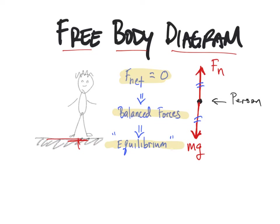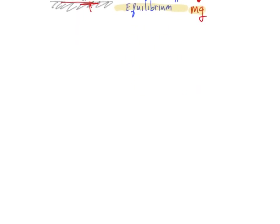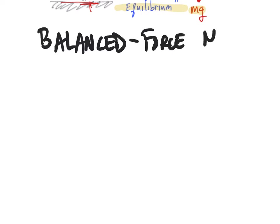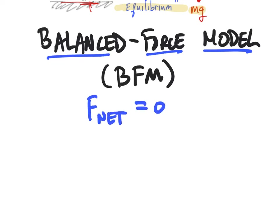What we're moving into right now is the balanced force model, which I'll abbreviate BFM. This is a model where you're thinking about situations where the condition is that all of the forces on the object cancel out — in other words, the net force is zero. It might be worth thinking about another situation you could imagine.